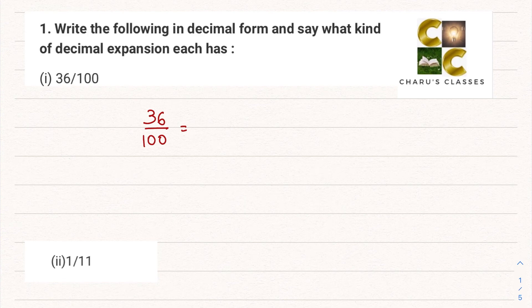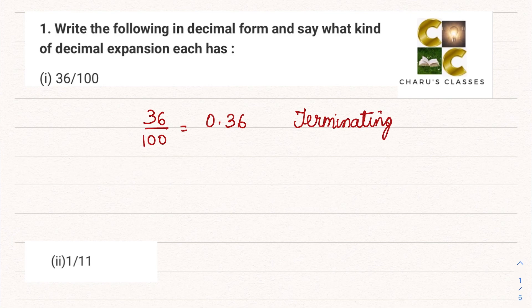When dividing by 100, the division is very easy. 100 has two zeros, so in 36 we shift two decimals from the right side. We are getting the answer as 0.36. This is a terminating decimal expansion. Terminating decimal expansions are those where the remainder becomes zero when we divide. This one is a terminating decimal expansion.